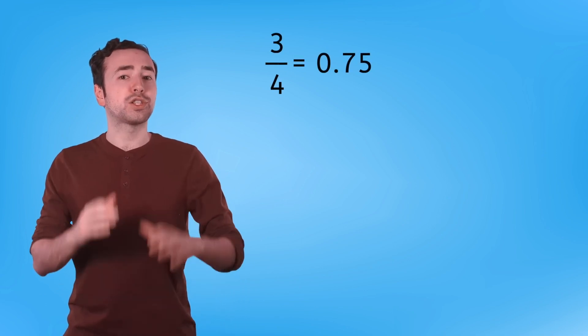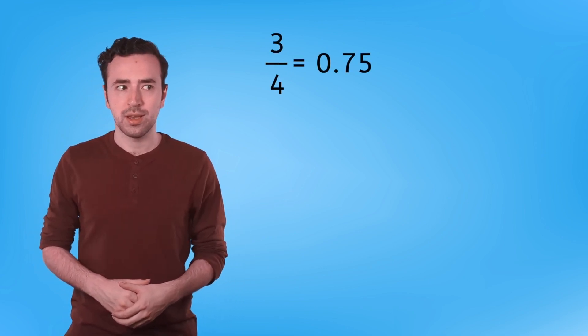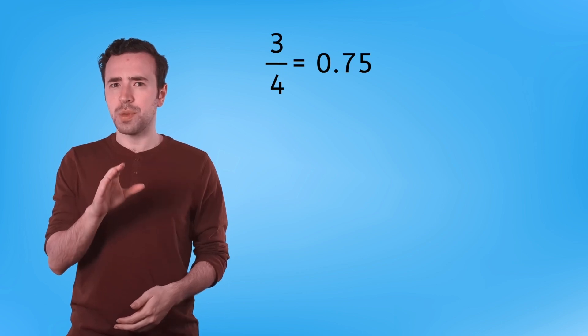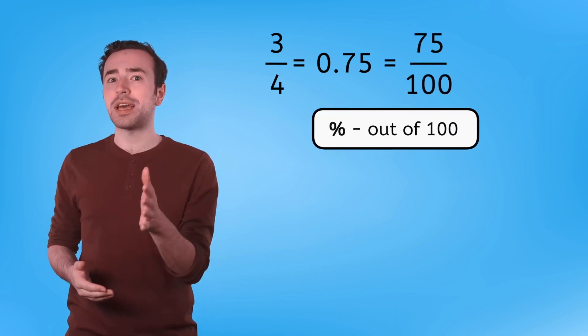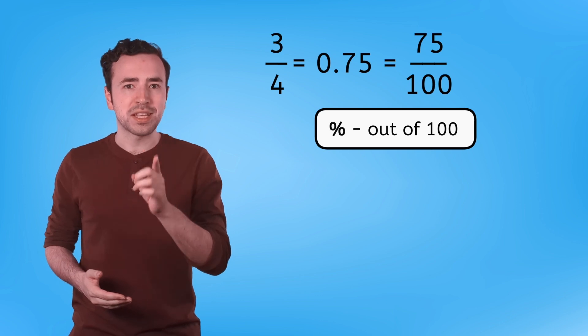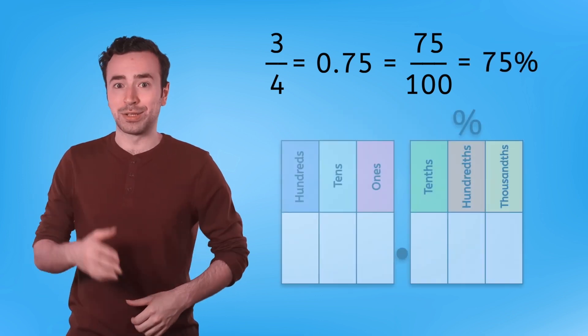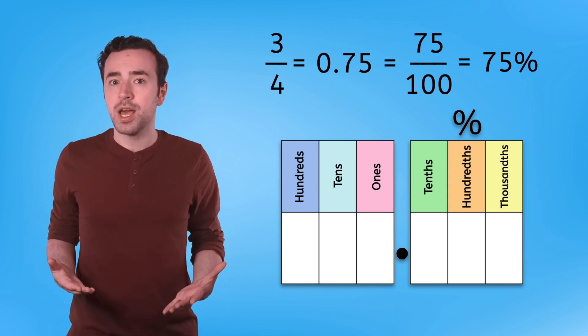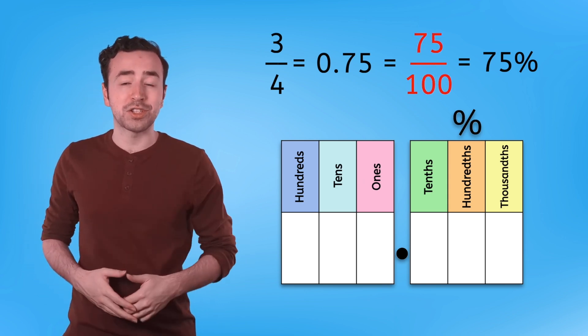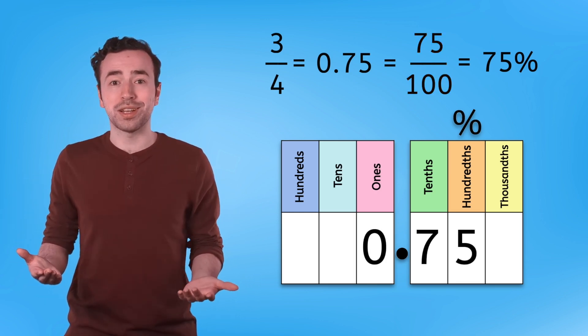We just discovered that the fraction three fourths is equivalent to the decimal 75 hundredths, which we know can also be represented as the fraction 75 hundredths. Since percent means out of 100, 75 hundredths is the same as 75%. Check this out. Decimal place values have a hundredth place, which means we can use fractions out of 100 or our decimal place value knowledge to help us figure out percentages.